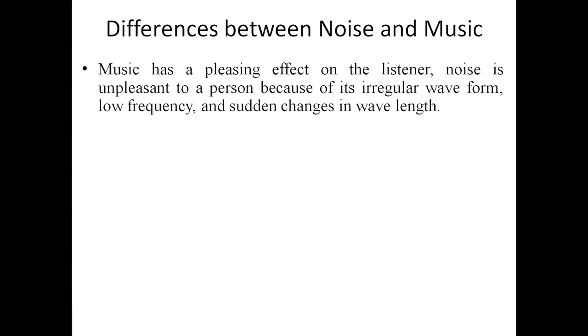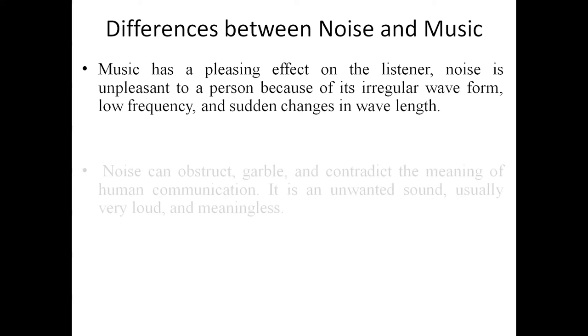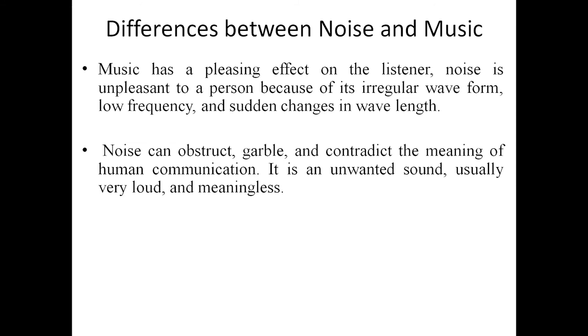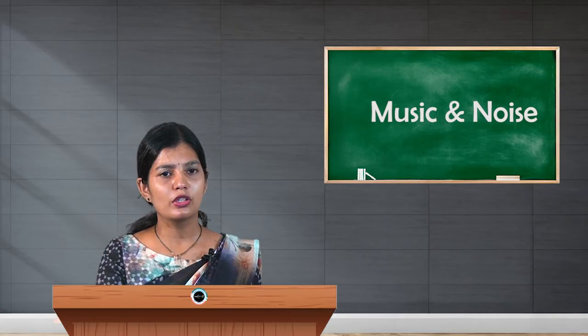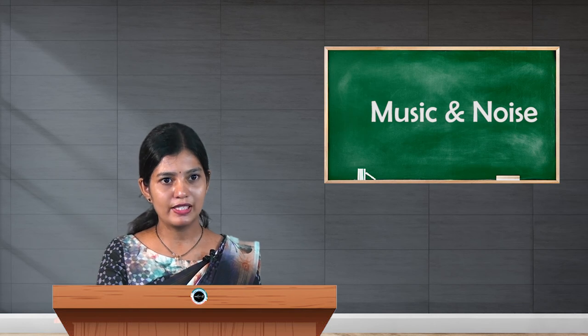Now let us list the differences between noise and music. Music has a pleasing effect on the listener, while noise is unpleasant because of its irregular waveform, low frequency, and sudden changes in wavelength. Noise can obstruct, garble, and contradict the meaning of human communication. Noise is an unwanted sound — usually very loud and meaningless — and may contradict the meaning of normal human conversation.